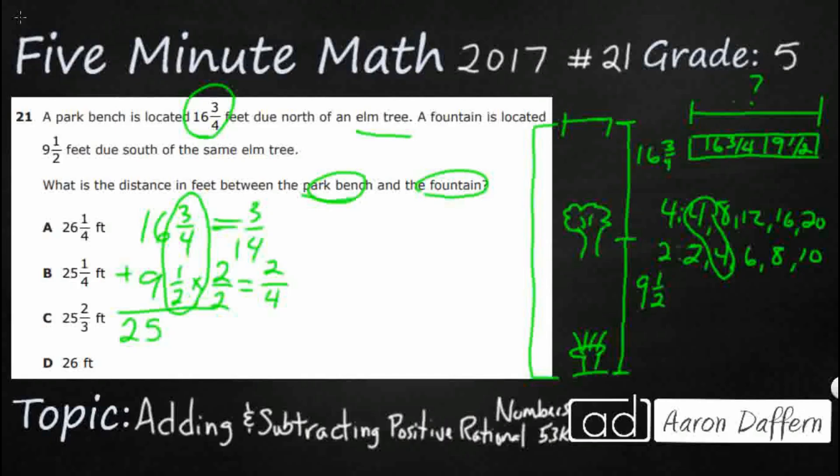So, if I add up 3/4 and 2/4, my answer looks like it's going to be 3 plus 2 is 5. 25 and 5/4, it's not there because that is an improper fraction. So, 5/4, how do we make that into a mixed number?